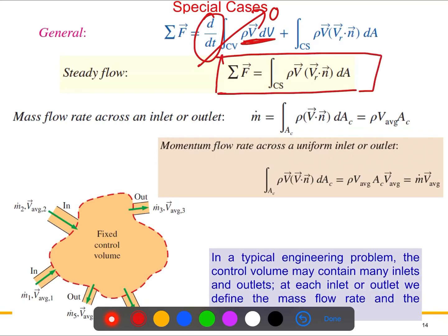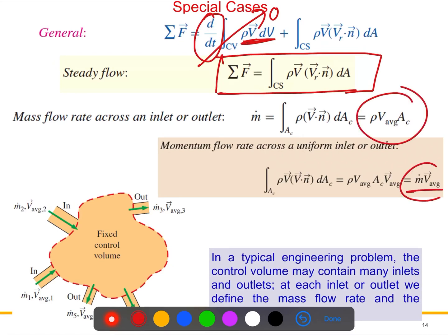To calculate the mass flow rate across an inlet or outlet, we get the expression ρ_average times the cross-sectional area. For the momentum flow rate at uniform inlets and outlets, we use the average velocity. These are the final terms we'll use when solving problems, so we'll apply and discuss them during the worked examples.